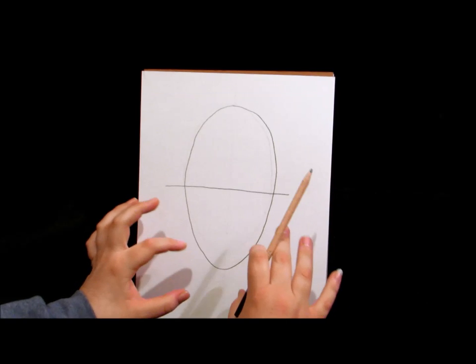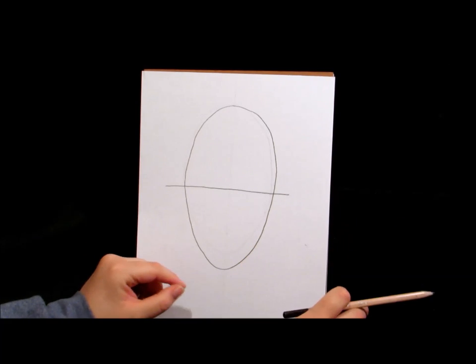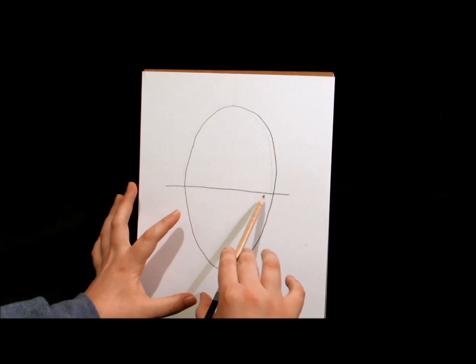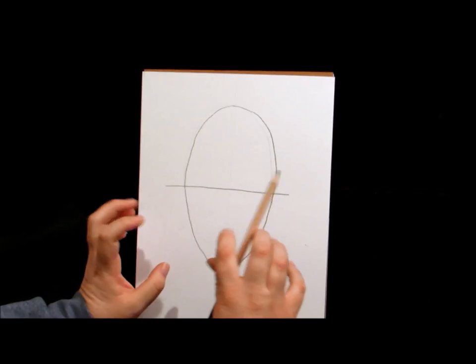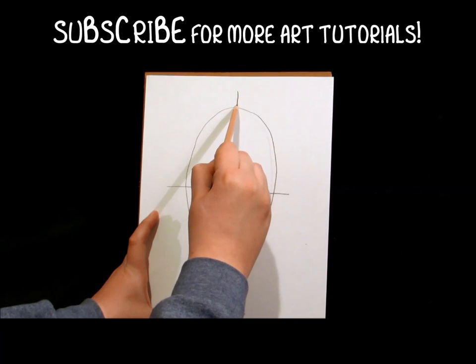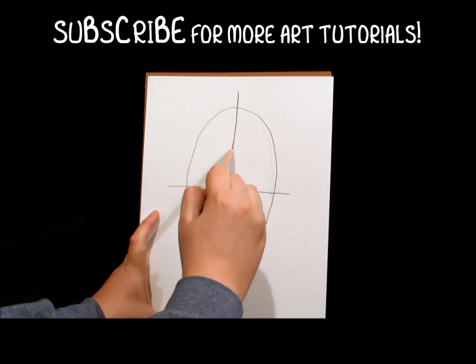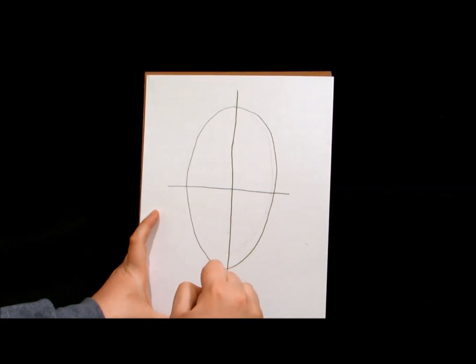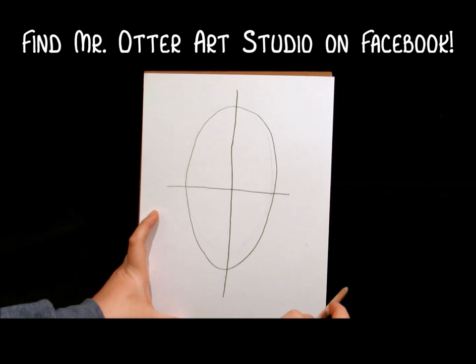Now I'm using a really dark pencil so that it will show up on the camera but you can use a lighter pencil when drawing the measuring lines so that you can erase them later. The next step is you're going to draw a vertical line going down through the middle of that oval you just created.